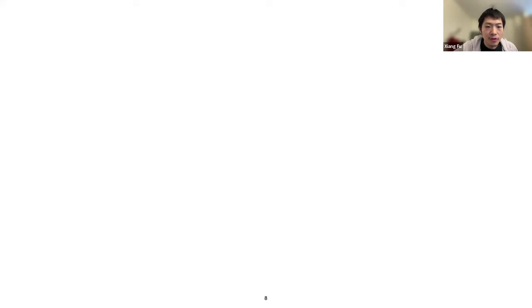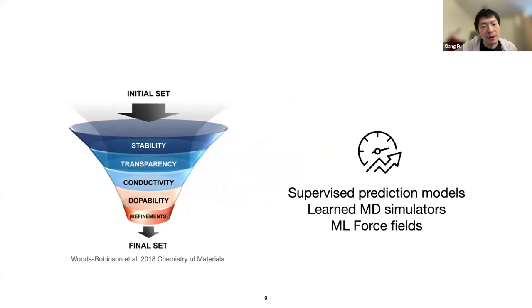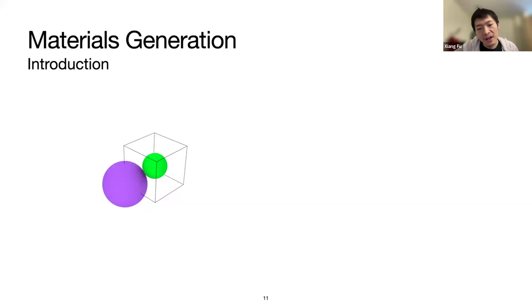The role of the generative model is to discover new structures that can survive the funnel — that can pass all the filters and have the desired properties. So let's define the material structure: you define atom types, atom coordinates, and the lattice parameter. You have a periodic unit cell, with a few atoms within it, and then you infinitely expand the structure in all dimensions.